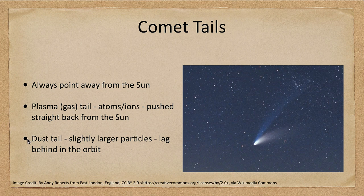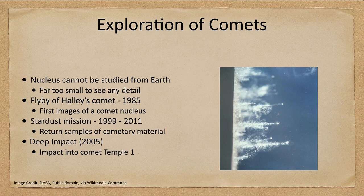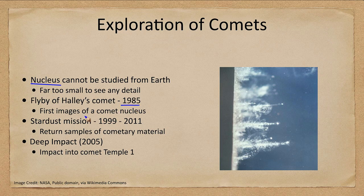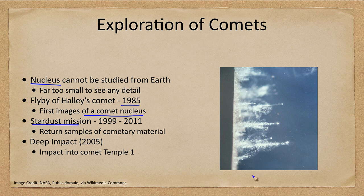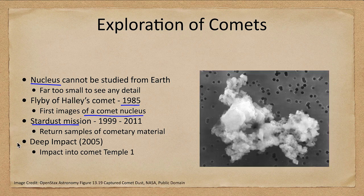How can we explore comets? The nucleus cannot be studied from Earth — it is far too small to see anything. The very first attempts were flybys of Halley's Comet, which occurred in 1985 and gave us the first images of a comet nucleus. The Stardust mission allowed us to collect material by flying through and catching tiny particles in a special material designed to retain them, which were then brought back to Earth.